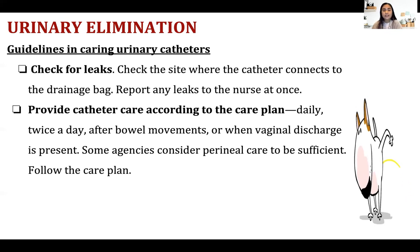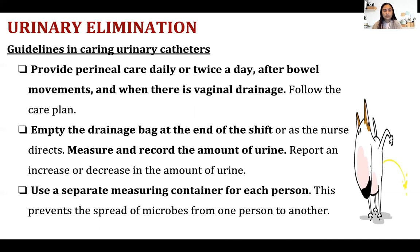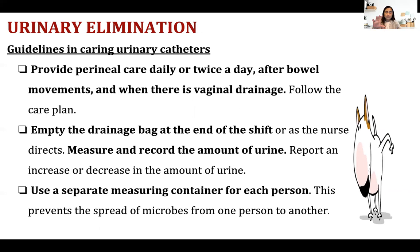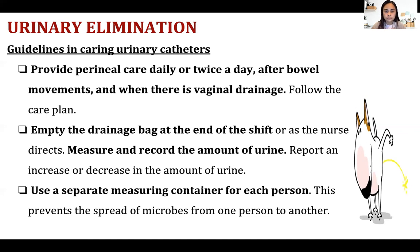Provide catheter care according to the care plan — it should be done daily, twice a day, or after bowel movements, or when vaginal discharge is present. Empty the drainage bag at the end of your shift, usually every 8 or 12 hours. Measure and record the amount of urine. Use a separate measuring container for each person to prevent cross-contamination. Place the calibrated container on a flat surface at eye level when measuring.